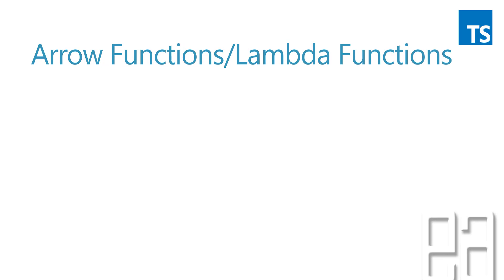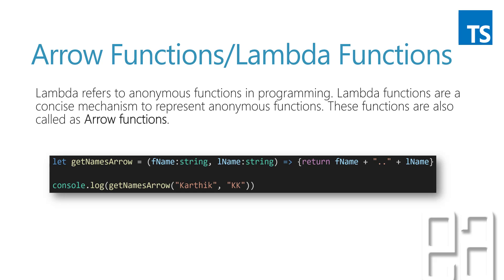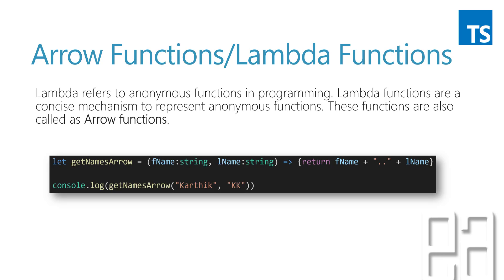There is another function declaration which is the arrow function, or lambda functions. A lambda refers to an anonymous function in programming, but lambda functions are a concise mechanism to represent anonymous functions. With the arrow function in TypeScript, there is no function keyword — only the parameters, a fat arrow, and then a block of code. It performs the same thing but without the function keyword.